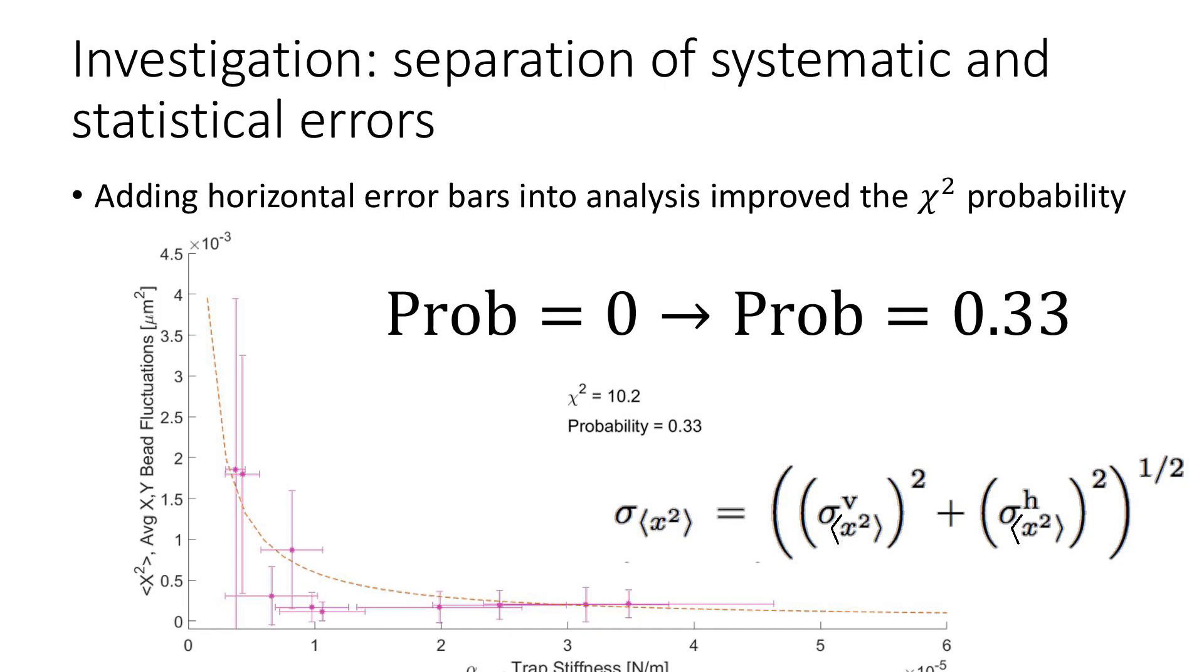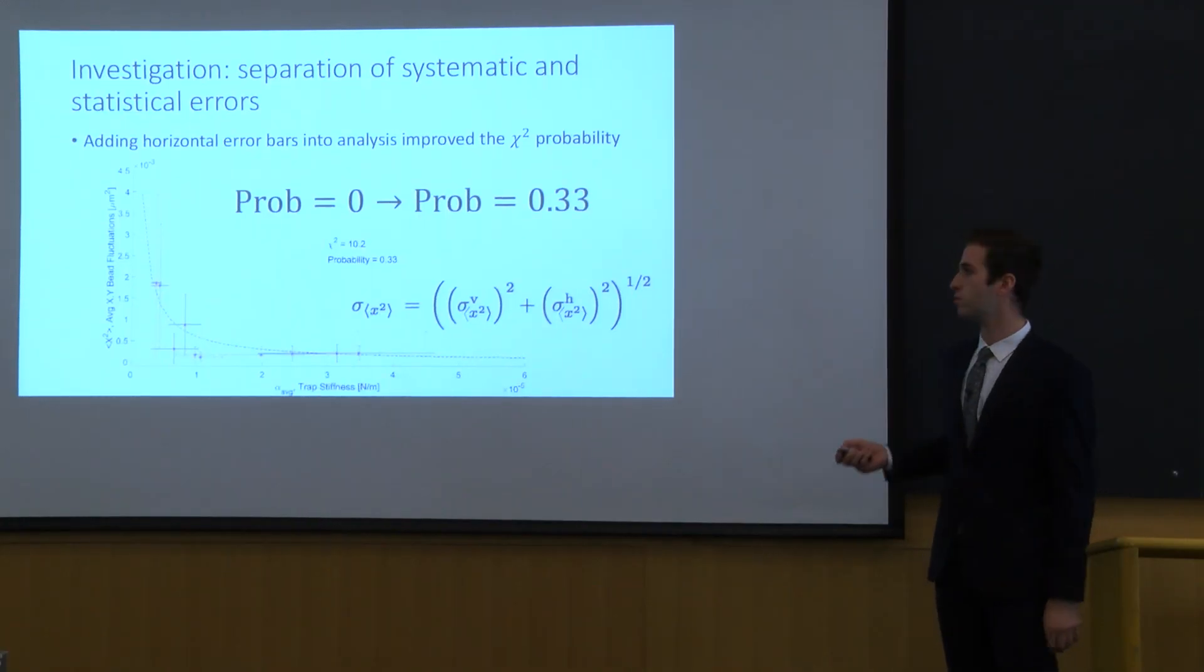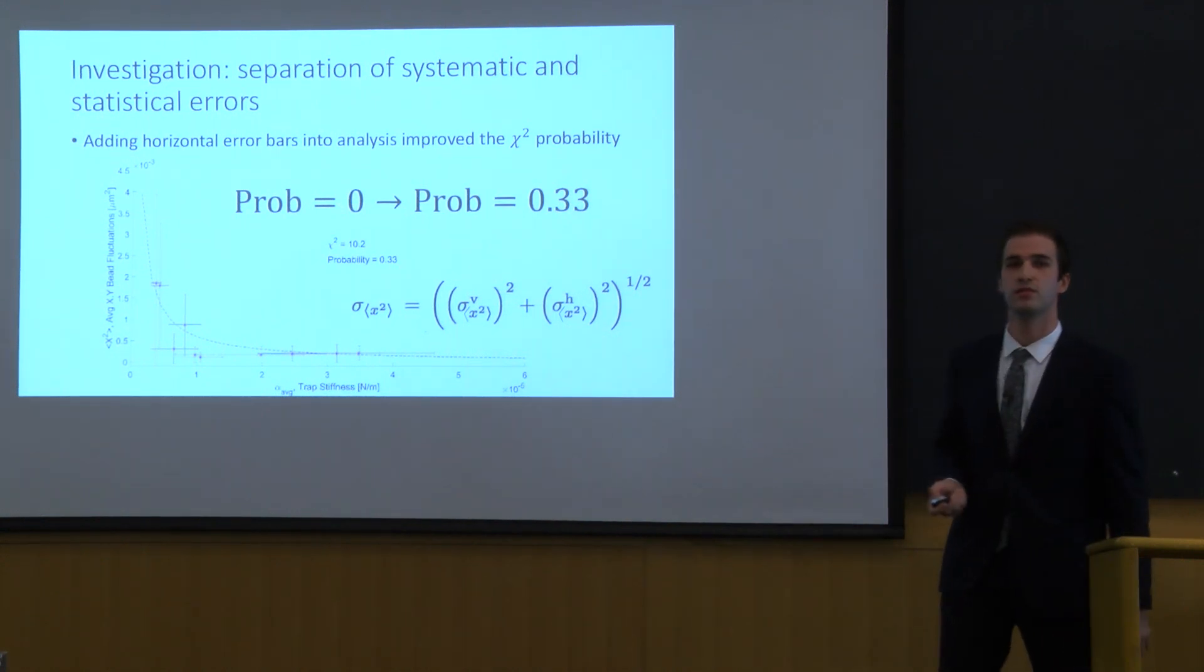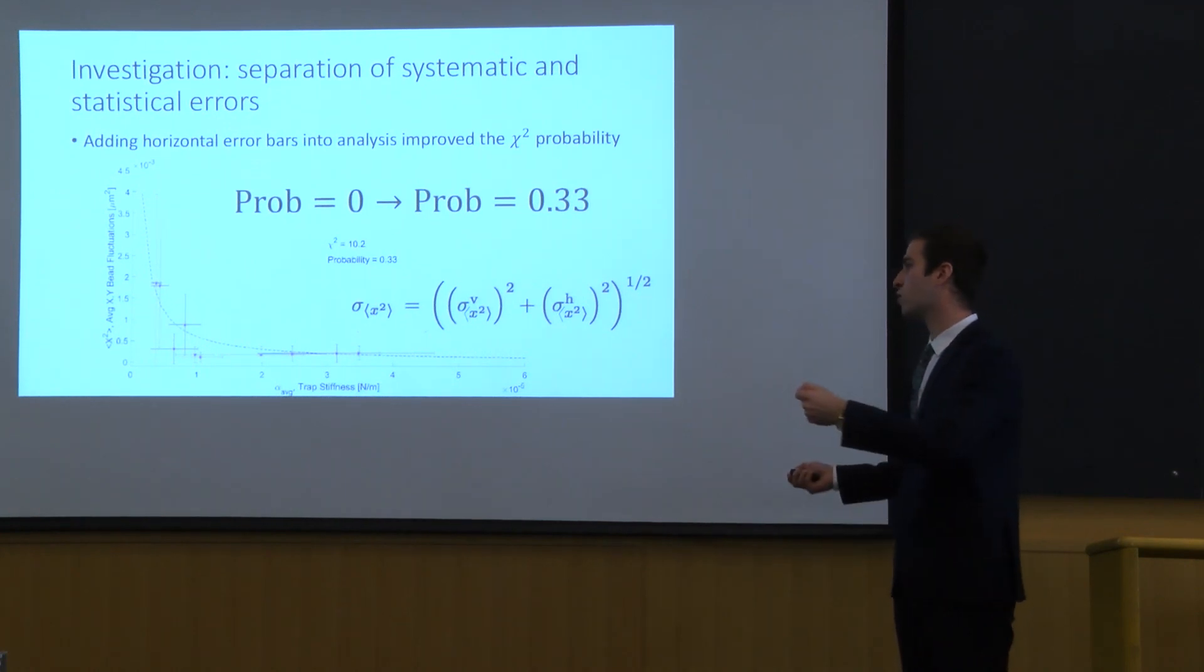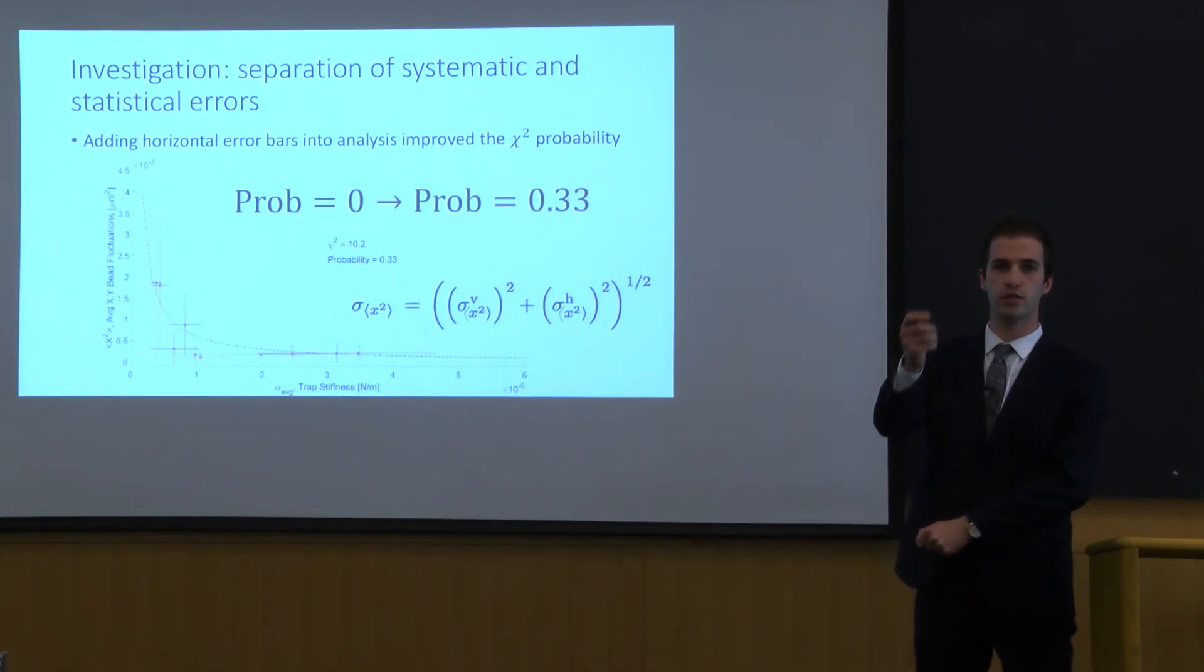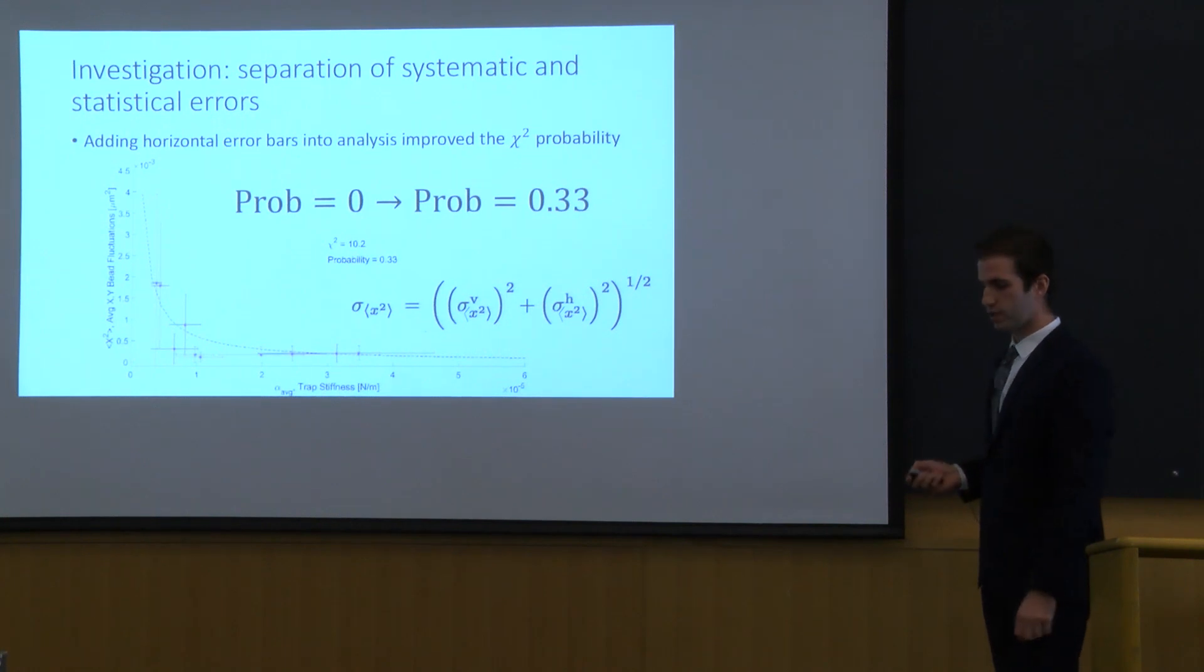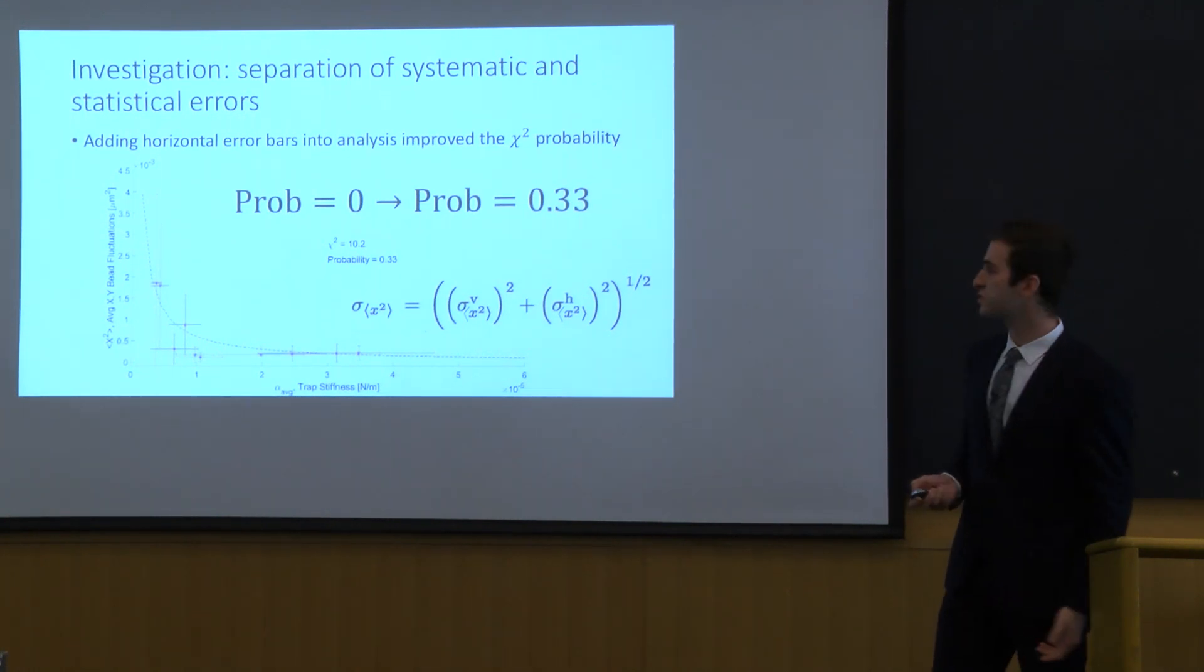And the third one is concerned with our fit with the fluctuations in terms of the trap stiffness. Initially when we did the fit with the PSD method we get a probability of chi squared equals zero. And then we quickly realized that essentially what we need to do is take into account the horizontal errors. And here what we do is we transform the horizontal errors into the vertical errors and this thing we can do by using addition in quadrature and propagation of the errors which gave us a reasonable realistic chi squared of 0.33.